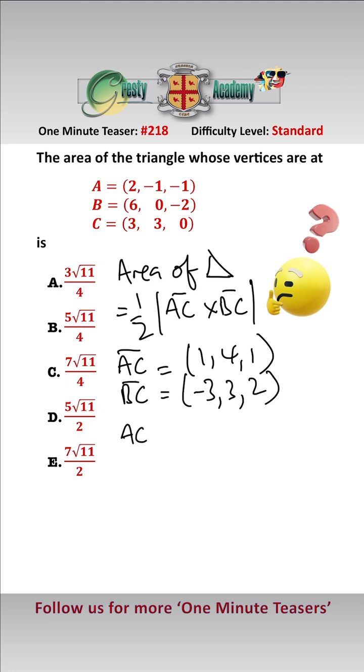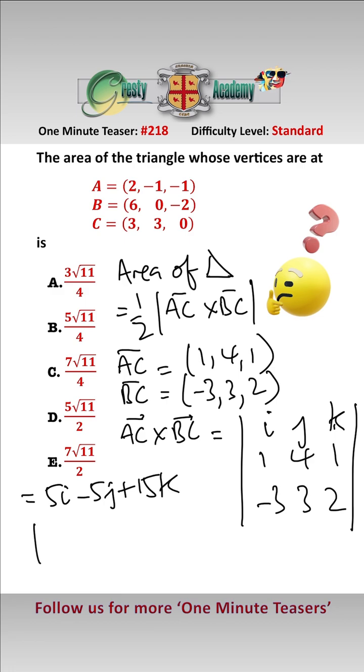So therefore, the cross product AC crossed with BC is equal to looking at the determinant: i, j, k; 1, 4, 1; -3, 3, 2. That gives us 5i minus 5j plus 15k.